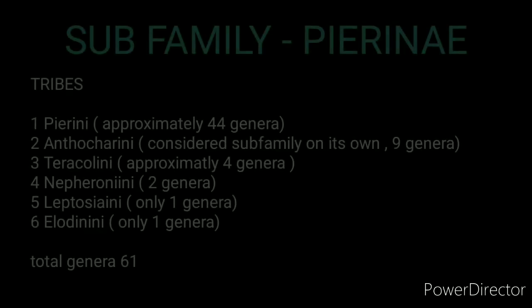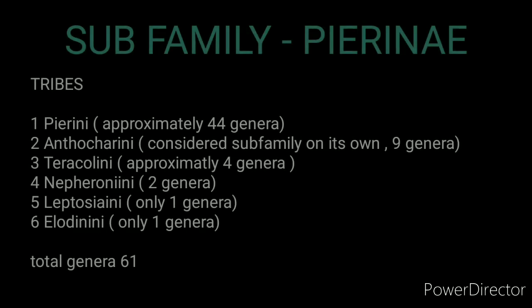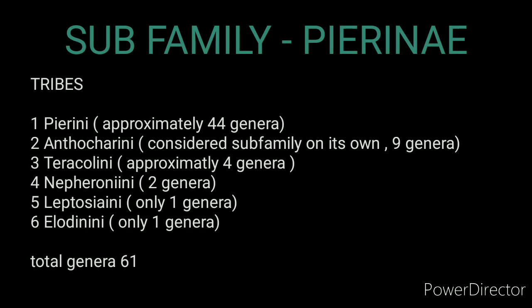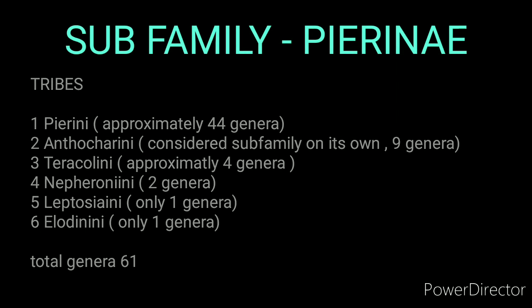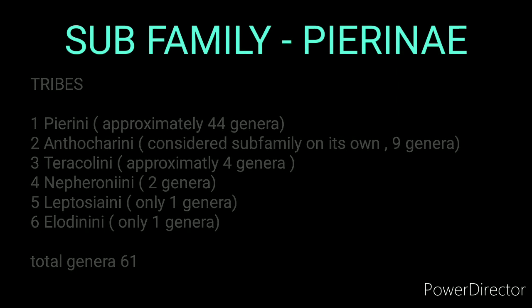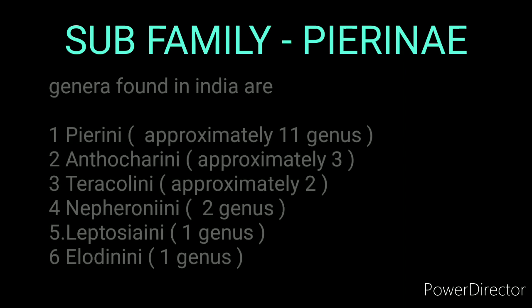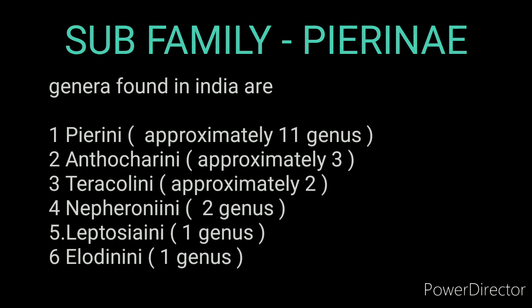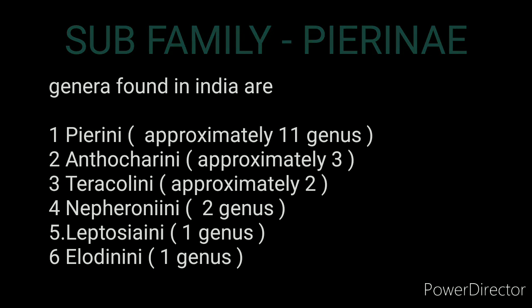The sub-family Pierinae has six tribes, and the total number of genera found worldwide in these tribes is 61. In sub-family Pierinae, approximately 21 genera are found in India.